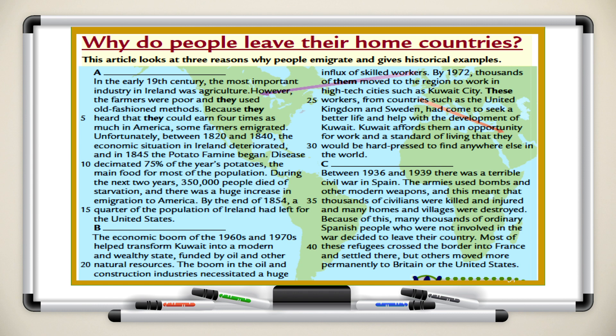The economic boom of the 1960s and 1970s helped transform Kuwait into a modern and wealthy state, funded by oil and other natural resources. The boom in the oil and construction industries necessitated a huge influx of skilled workers. By 1972, thousands of them moved to the region to work in high-tech cities such as Kuwait City. These workers from countries such as the United Kingdom and Sweden had come to seek a better life and help with the development of Kuwait. Kuwait affords them an opportunity for work and the standard of living that they would be hard-pressed to find anywhere else in the world.